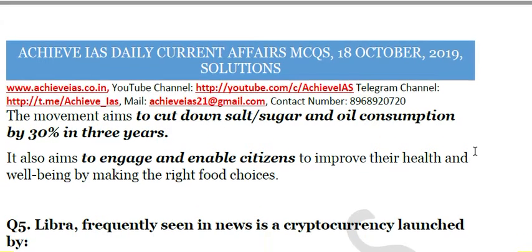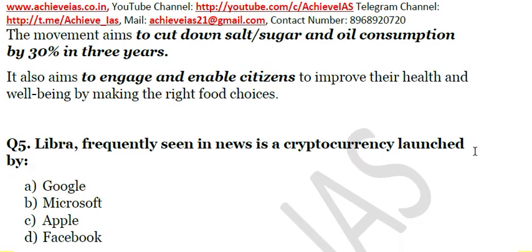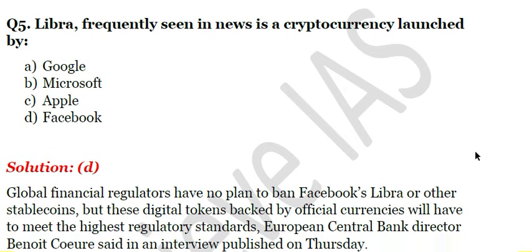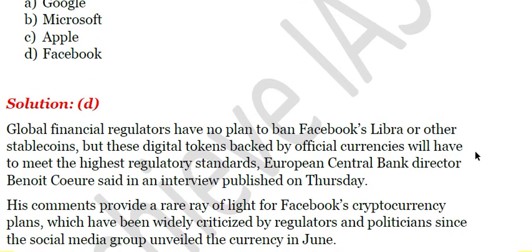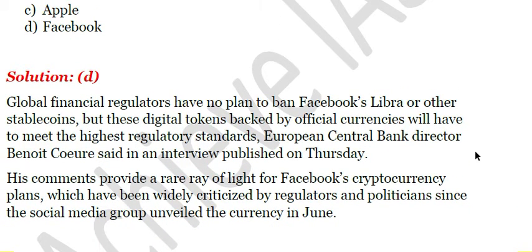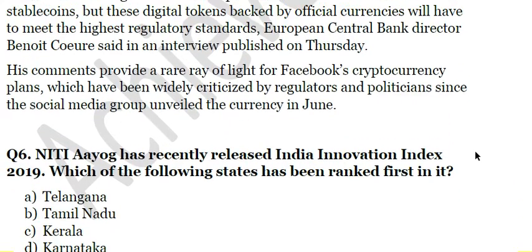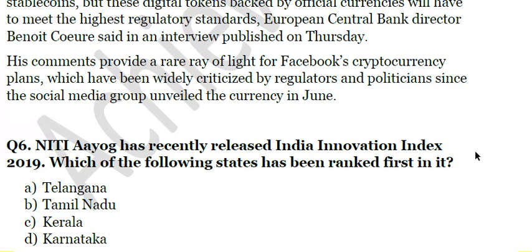Next question: Libra, frequently seen in news, is a cryptocurrency launched by — A) Google, B) Microsoft, C) Apple, D) Facebook. The answer is D — Facebook. It has been in the news because the European Central Bank director stated that global financial regulators currently have no intention to ban Facebook's Libra. His comments provided a ray of hope for Facebook's cryptocurrency plans, which have been widely criticized by regulators and politicians since the social media group unveiled the currency in June 2019.